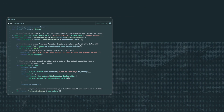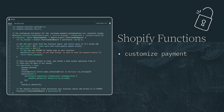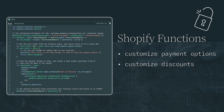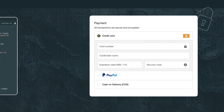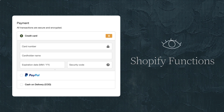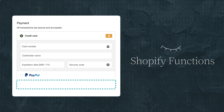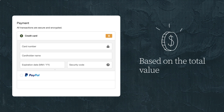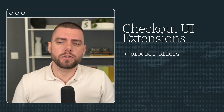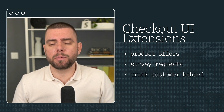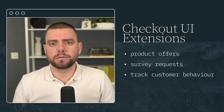With checkout, you can also use Shopify functions to customize payment options, add fully customized discounts, and more. In this example, Shopify functions is used to hide a payment option offered to customers at checkout, based on the total value of their cart. You can add product offers, survey requests, and track customer behavior with web pixels and with post-purchase extensions.